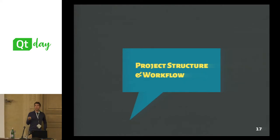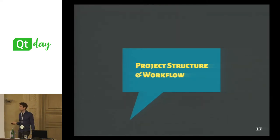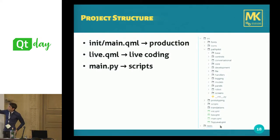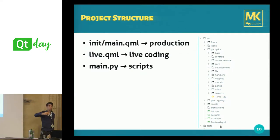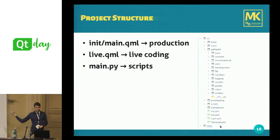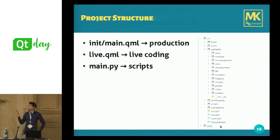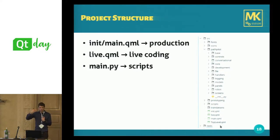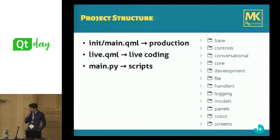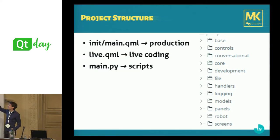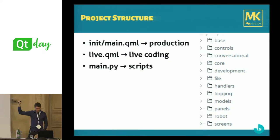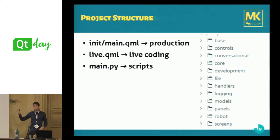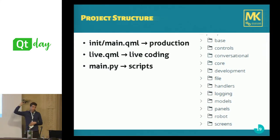Now I'll explain what the actual project structure looks like — this is relevant not just for Python but also for bigger applications in general. I'm using live coding, which I'll explain shortly. We have two entry points: the init or main file — init is just for the splash screen — and the main QML file, which is the actual top-level QML file. We also have the live QML file for live coding, and the main.py file, which is similar to your main C++ file as an entry point for your Qt application.